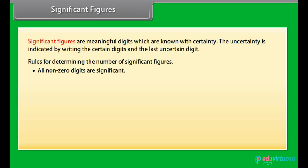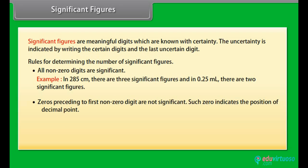All non-zero digits are significant. Example: In 285 cm, there are three significant figures and in 0.25 ml, there are two significant figures. Zeros preceding to first non-zero digit are not significant. Such zero indicates the position of decimal point. Thus, 0.03 has one significant figure and 0.0052 has two significant figures.